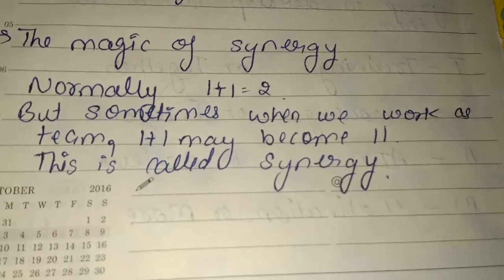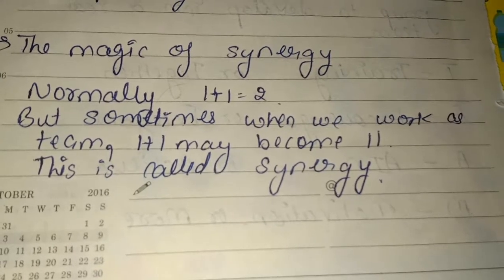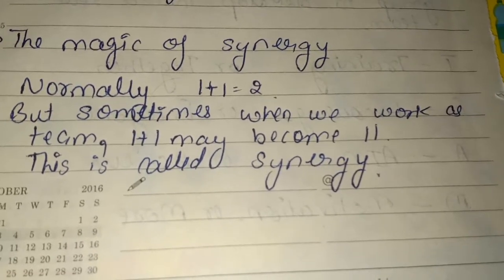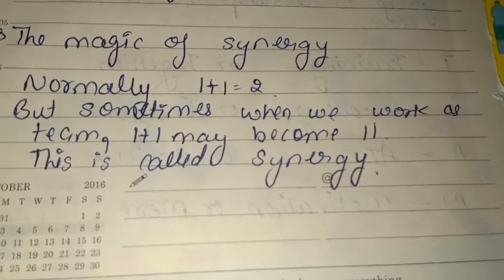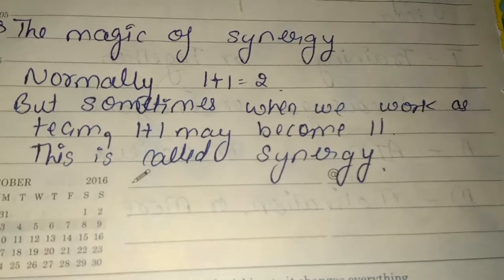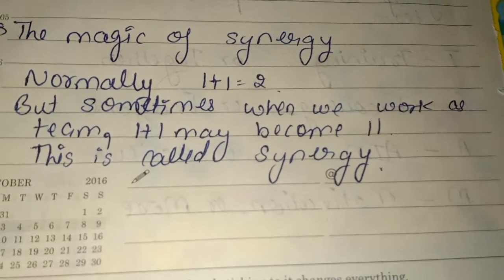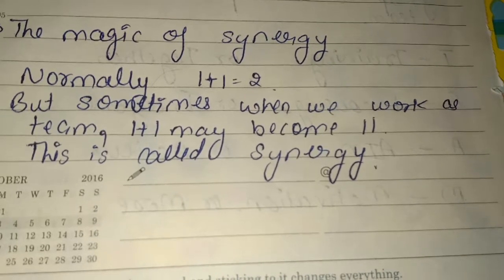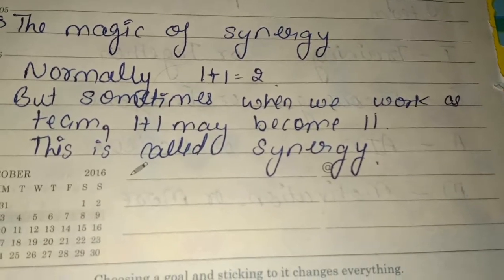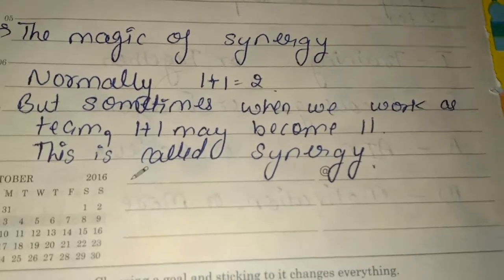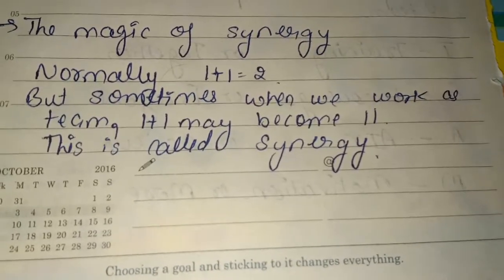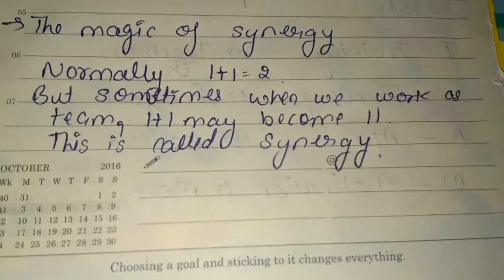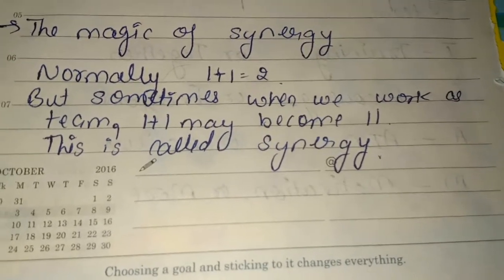If we work as a team, 1 plus 1 doesn't just equal 2 — it can become 11 or even more. This is what we call synergy: normally 1 plus 1 is 2, but in synergy, 1 plus 1 becomes 11. When two people come together and work, that work becomes doubly, even many times more powerful. So in work and synergy, 1 plus 1 equals 11, whereas normally 1 plus 1 is 2.